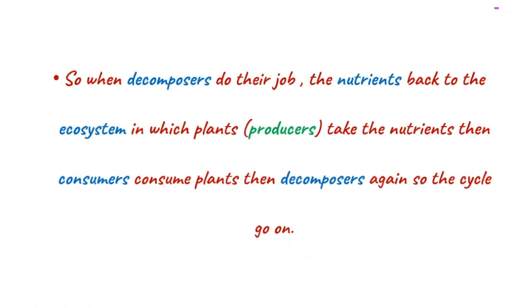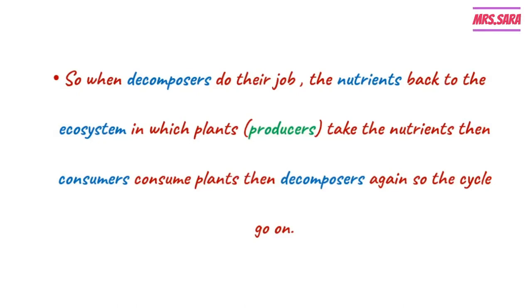When decomposers do their job, the nutrients go back to the ecosystem. Plants — the producers — take the nutrients, then consumers consume the plants, then the decomposers do their job again, so the cycle goes on. The decomposers make nutrients that the producers or plants use to make their food, then the first consumer consumes the plants, then other consumers eat the first consumer, then the decomposers do their job again. It's a cycle.